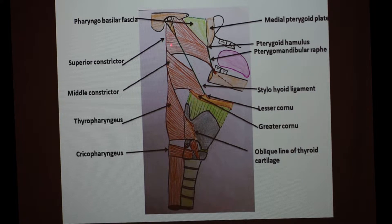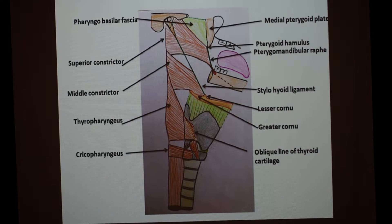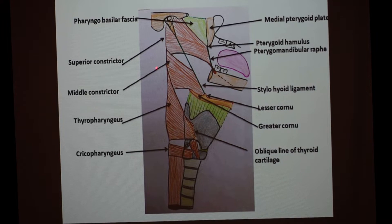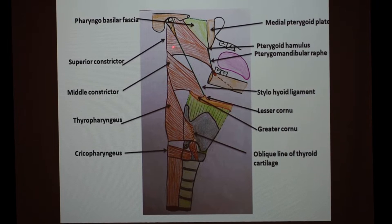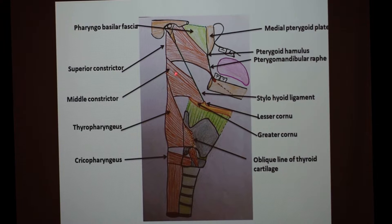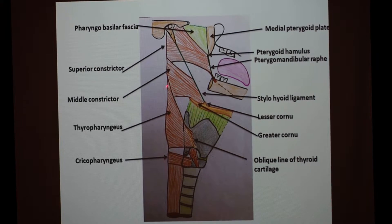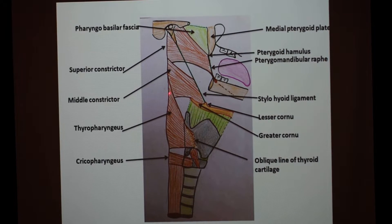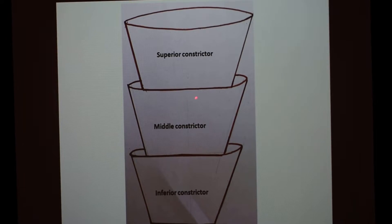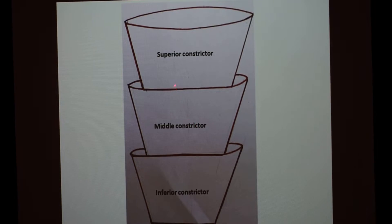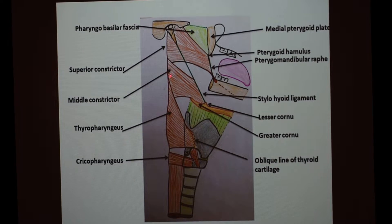The uppermost is the superior constrictor muscle. Below it is the middle constrictor, and the lowermost is the inferior constrictor, which has two parts: the upper larger part is the thyropharyngeus and the smaller lower part is the cricopharyngeus. These three constrictor muscles are arranged in an overlapping manner posteriorly at the site of insertion — the lower part of the superior constrictor is overlapped by the upper part of the middle constrictor, and similarly the lower part of the middle constrictor is overlapped by the upper part of the inferior constrictor. This arrangement is like placing three flower pots one inside another.